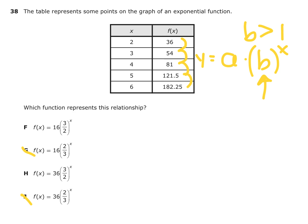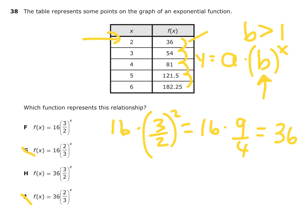If x is 2, we should get 36. Using your calculator, plug x equals 2 into the function: you have 16 times (3/2) squared, which is 16 times 9/4. Using your calculator, that gives 36, which is correct. So the answer should be F. You could also use your calculator to graph these and look for a table of values to match the given table, or plug in values of x into each equation F, G, H, J and see which gives those values.